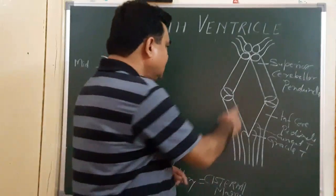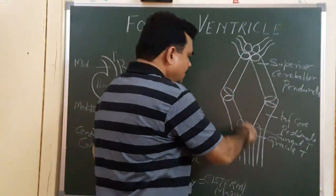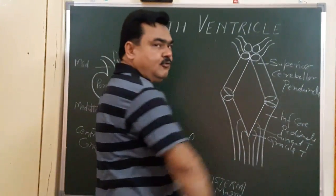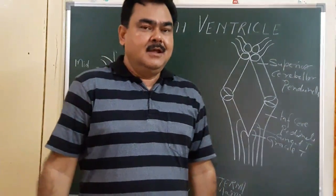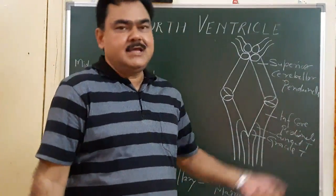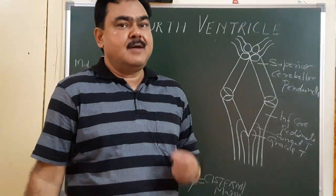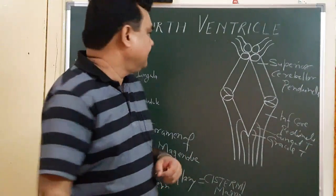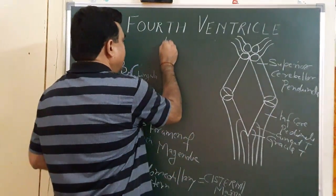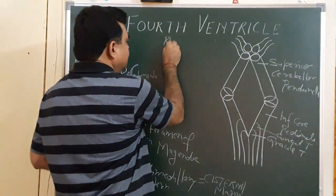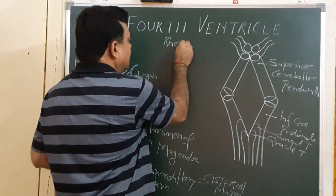Now we will discuss about this floor — the floor of the fourth ventricle. It is also known as the rhomboid fossa because its shape is rhomboid.